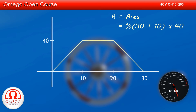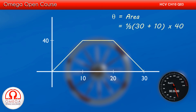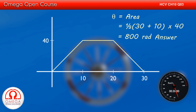The area of the trapezium is given by half into sum of parallel sides into height. Putting the values, we get angular displacement equal to half into (30 + 10) into 40, that is 800 radians. This is our answer.